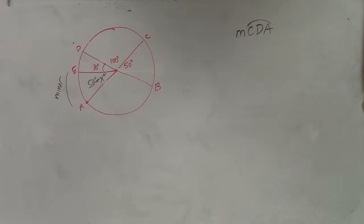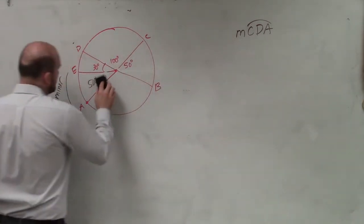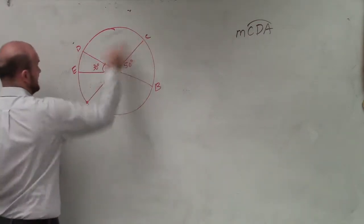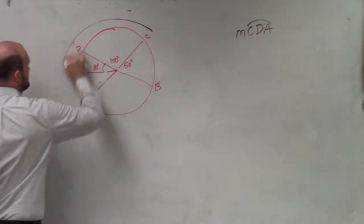All right. When looking at this one, they're saying find the measure of CDA. So we need to figure out the measure from C to D to A.